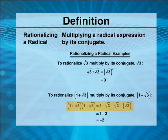This results in four products using the FOIL method: 1 minus the square root of 3 plus the square root of 3 minus the square root of 3 squared.